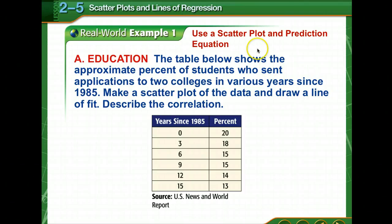So we've got a table, and it shows the approximate percent of students who sent applications to two colleges in various years since 1985. We're to make a scatter plot of the data and draw a line of fit. And we're also to describe the correlation. So I made a note of the points. It might be handy for you to do that as well before you go any further.